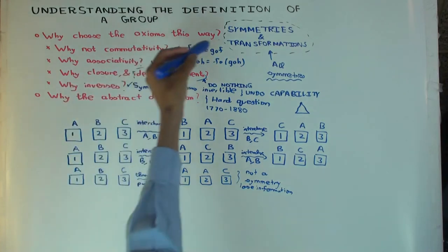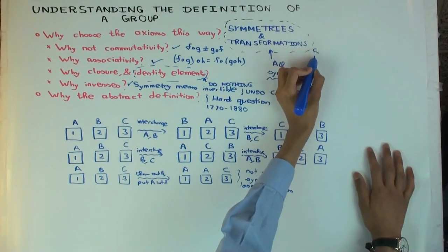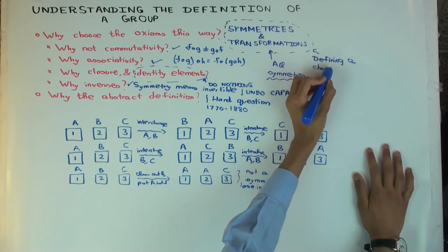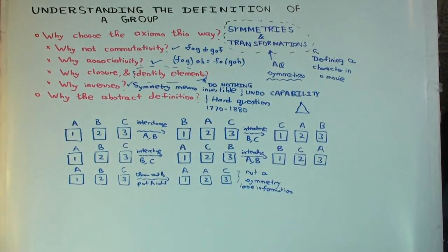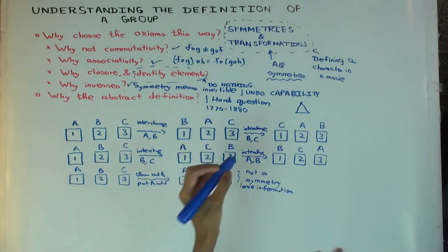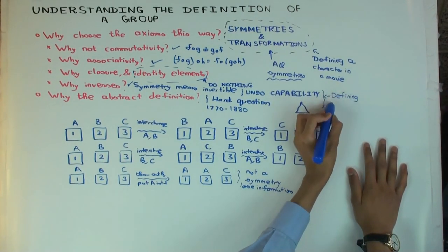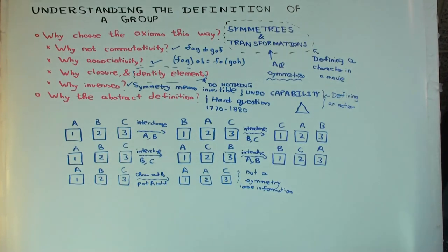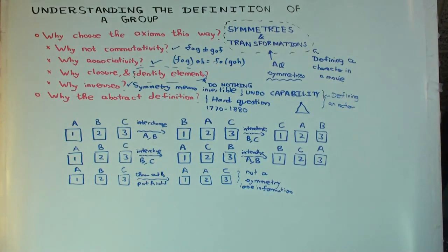It's like this: the symmetries-of-a-structure definition is like defining a character in one specific movie. But the abstract definition of a group is like defining an actor. Now this actor — the group — can act in many movies, meaning the same group can act on many different sets and structures. The abstract definition allows the same actor to appear in different movies, and you can still say it's the same actor.